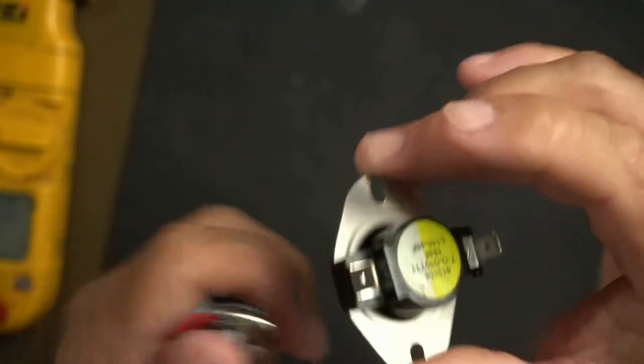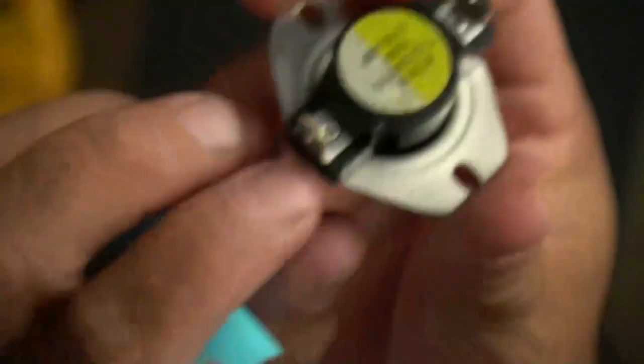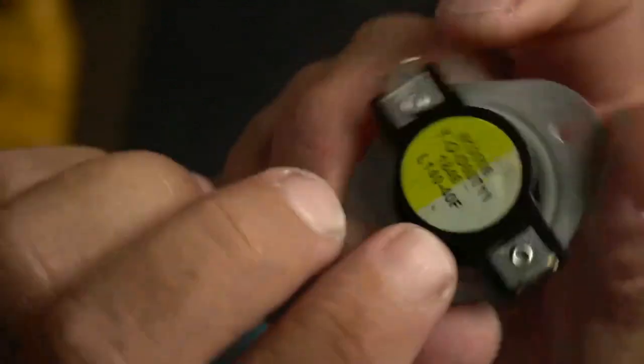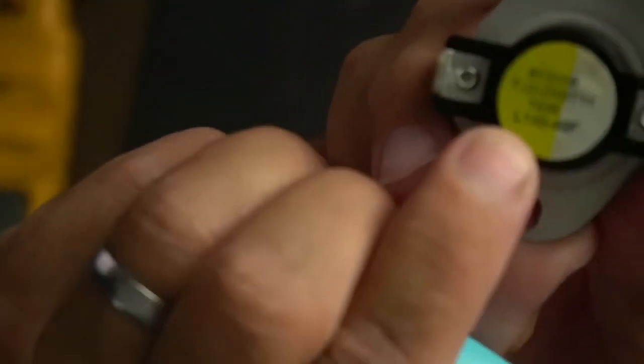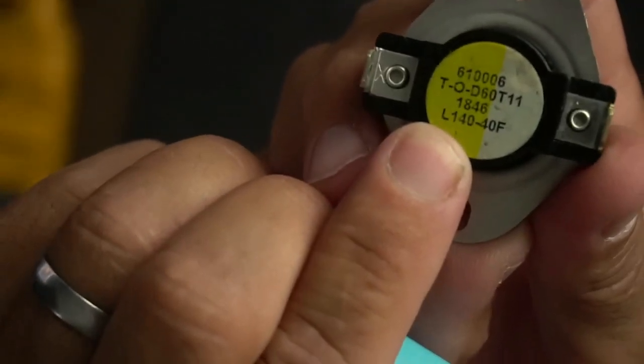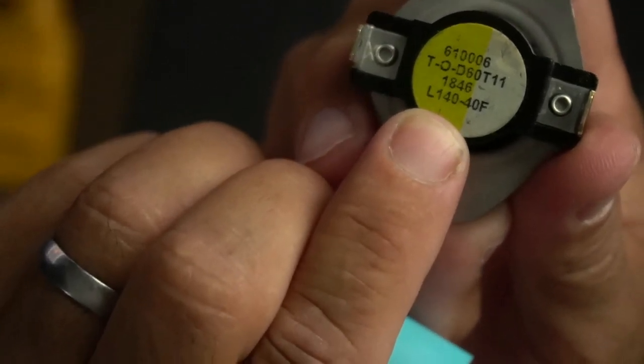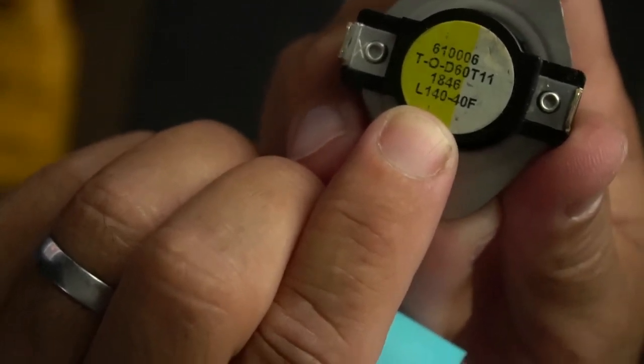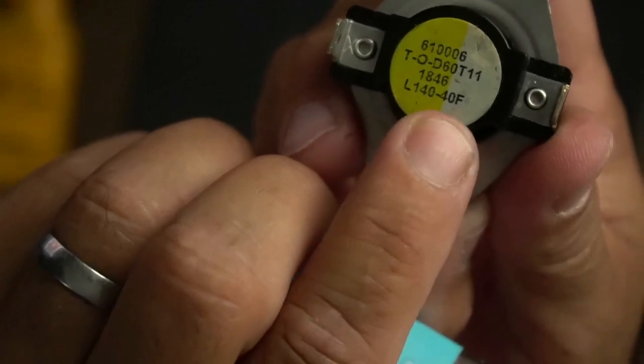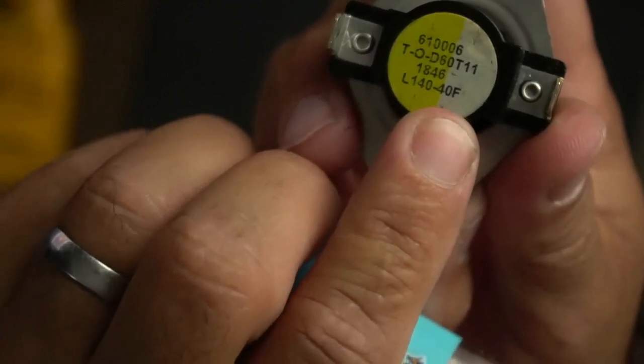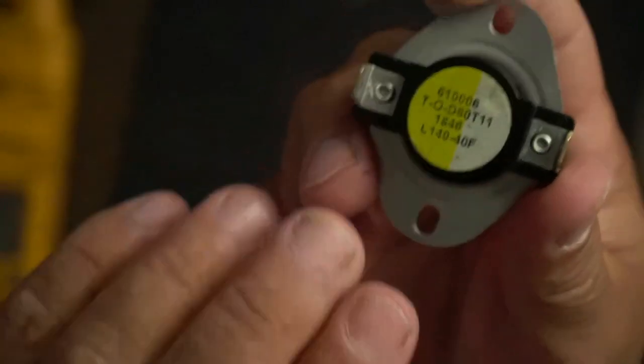Now I'm going to do the same thing. So as you can see, there's an L, which indicates limit switch, 140, so at 140 degrees, that's where it'll shut off. And then that's a minus 40, that means that when it comes back to 100, it's going to kick back on. So this, at 140 degrees, if it gets too hot.